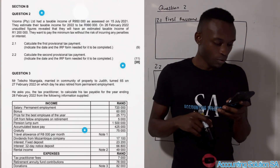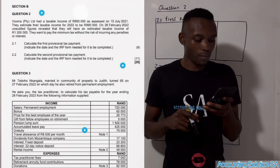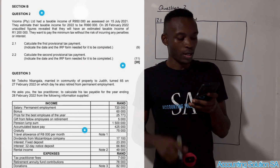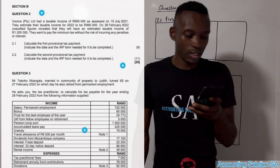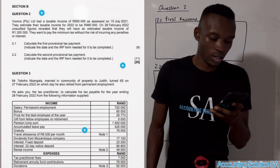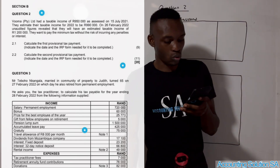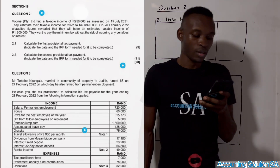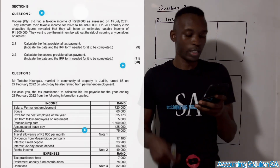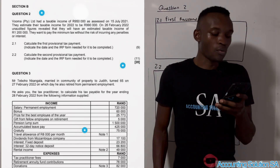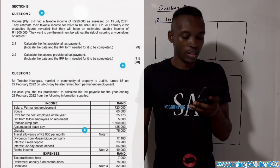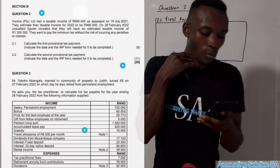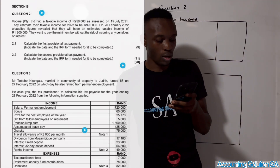Let's first read the scenario. They said Volma Pty Ltd had a taxable income of R950,000 as assessed on 15 July 2021, and they estimate their taxable income for 2022 to be R990,000. Then on 26 February 2022, which is our current year, unaudited figures reveal that they will have an estimated taxable income of R1.2 million.